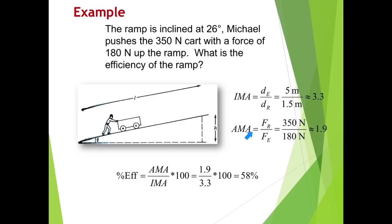Now to finish this equation, I also have to know AMA. So AMA is always force resistance over force effort. Up here in the example it says the cart is 350 newtons. So my force resistance is going to be 350 newtons. Now Michael, with his big strong muscles, is pushing this cart with a force of 180 newtons. So that means his effort force is 180 newtons.